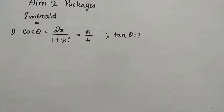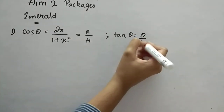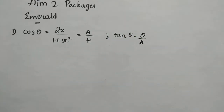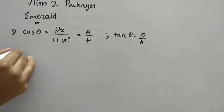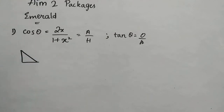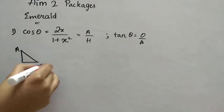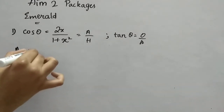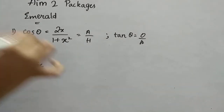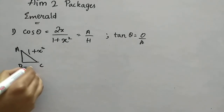Let's start solving it. Tan θ is opposite by adjacent. First, draw right angle triangle ABC. We know the hypotenuse is (1 + x²) and the adjacent is 2x.